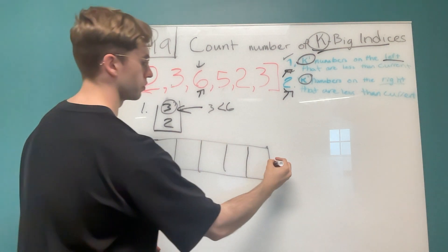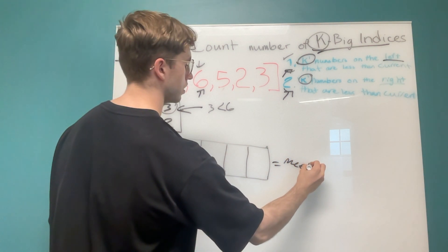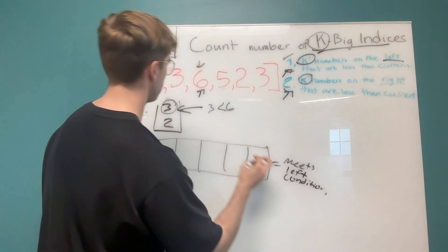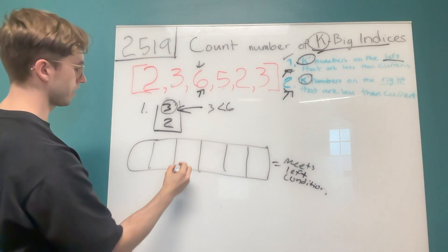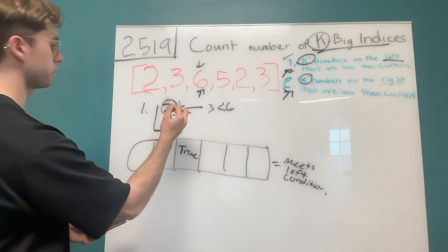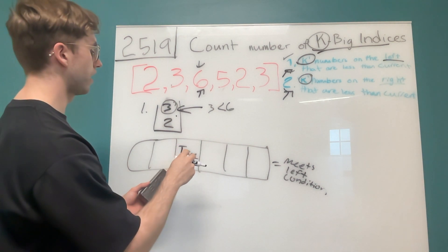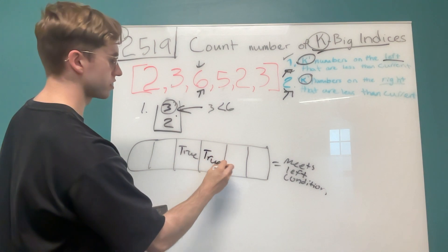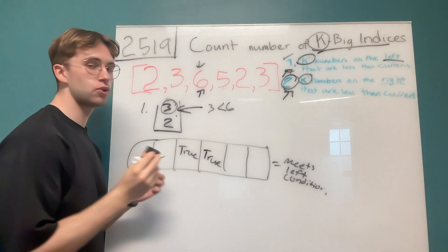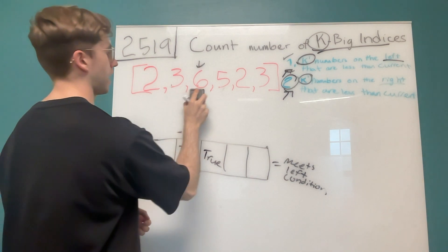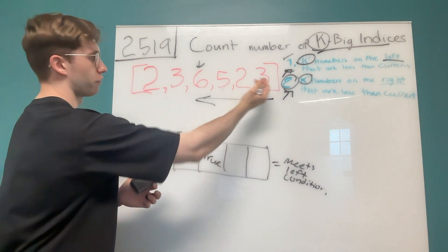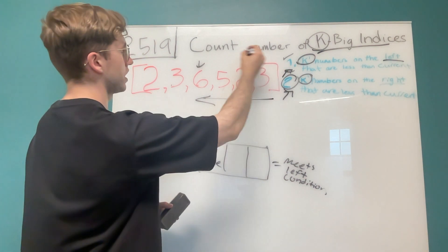We maintain an array called 'valid left condition' that marks for each index whether the left condition is met. At index two (value six), this is true. As we move along, we maintain our max heap and signal where the left condition is met. Then to evaluate the second criteria, we do the exact same thing but in reverse — going from right to left, still maintaining a max heap of size k.